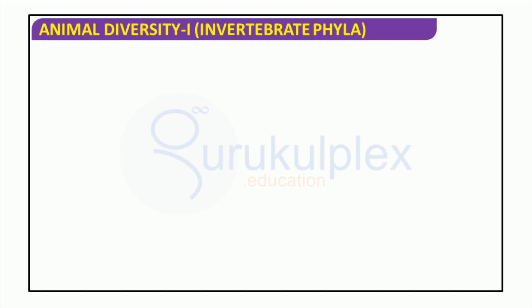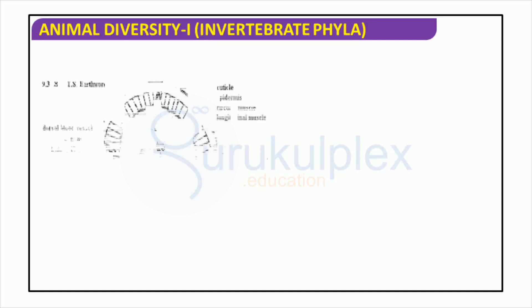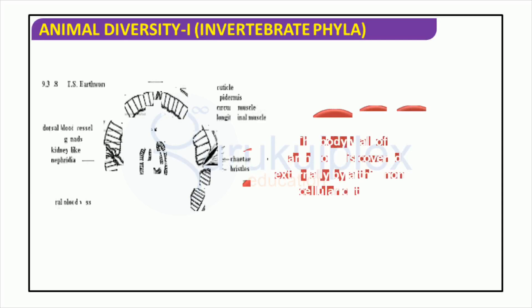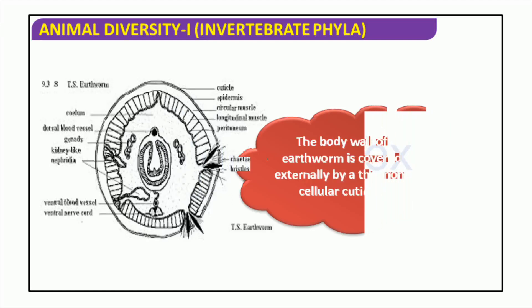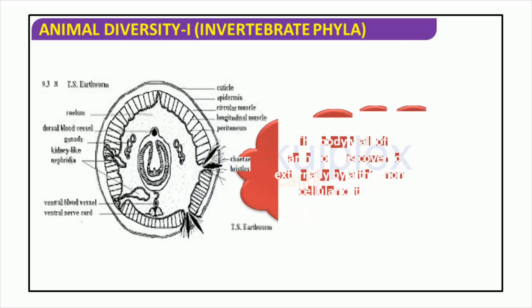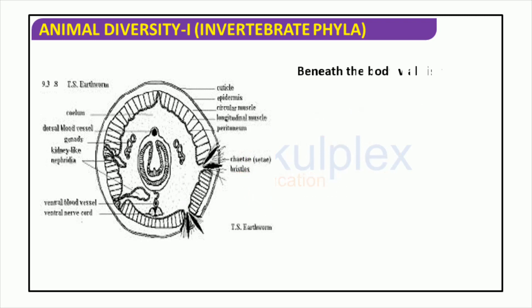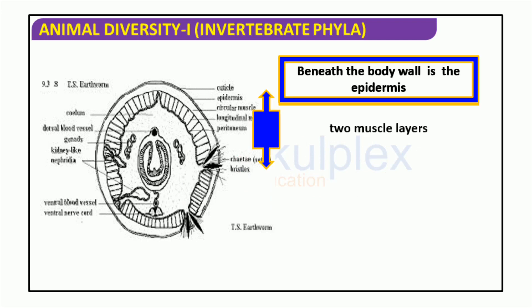Earthworms are impressive invertebrates with a critical purpose in our environment. The body wall of an earthworm is covered by a thin non-cellular cuticle with an epidermis, two muscle layers, and a coelomic epithelium underneath it. The two muscle layers are an outer circular muscle layer and an inner longitudinal muscle layer. This provides an overview of the anatomy of the earthworm.